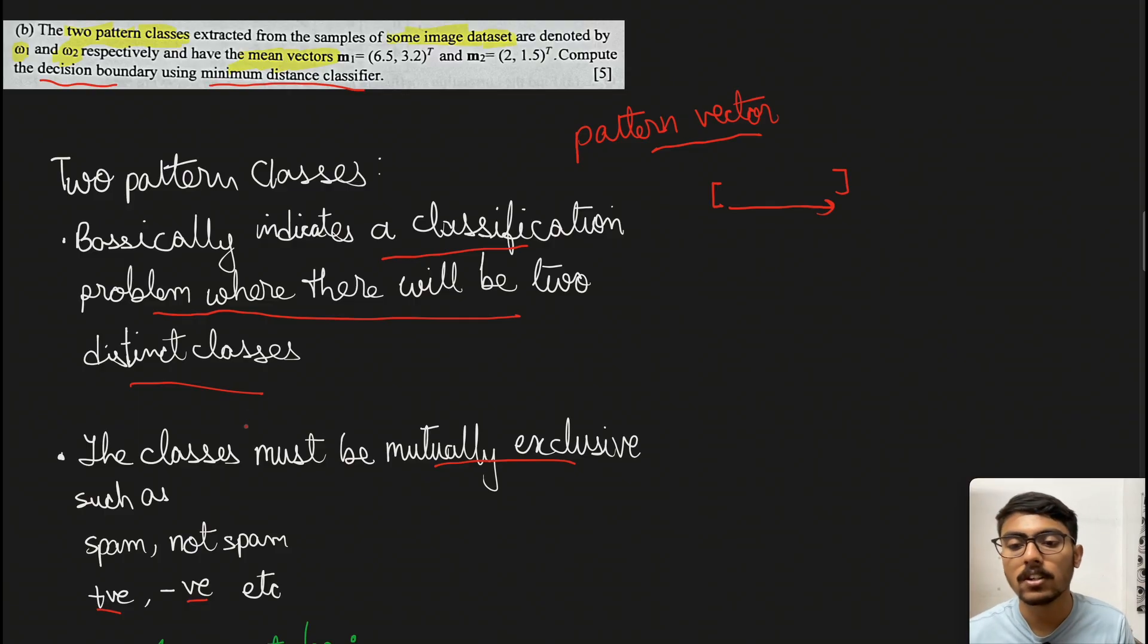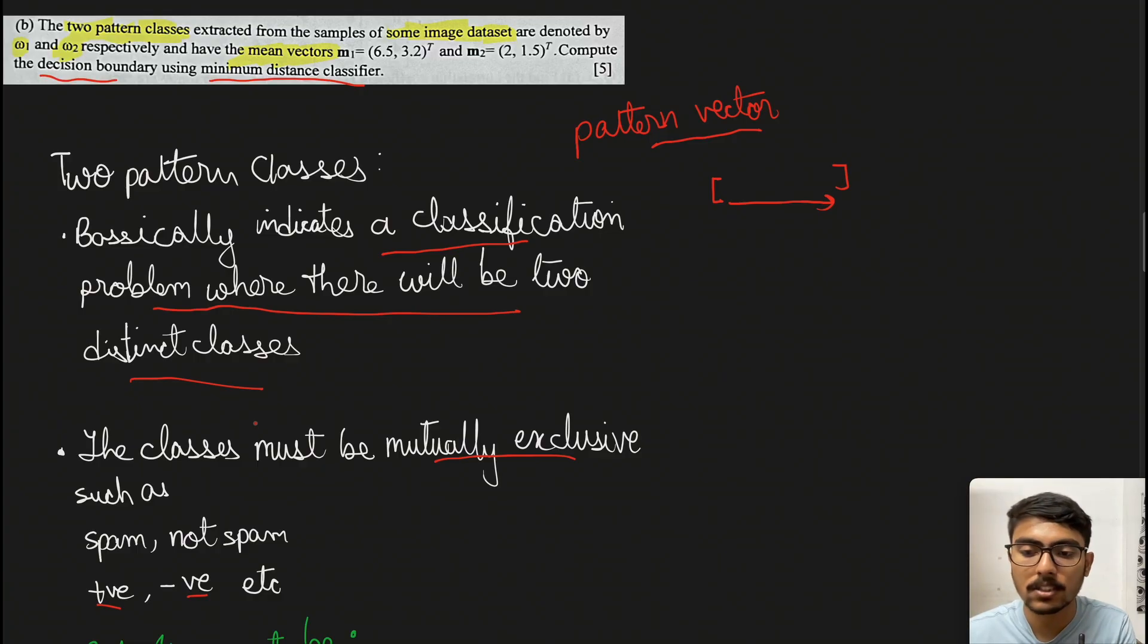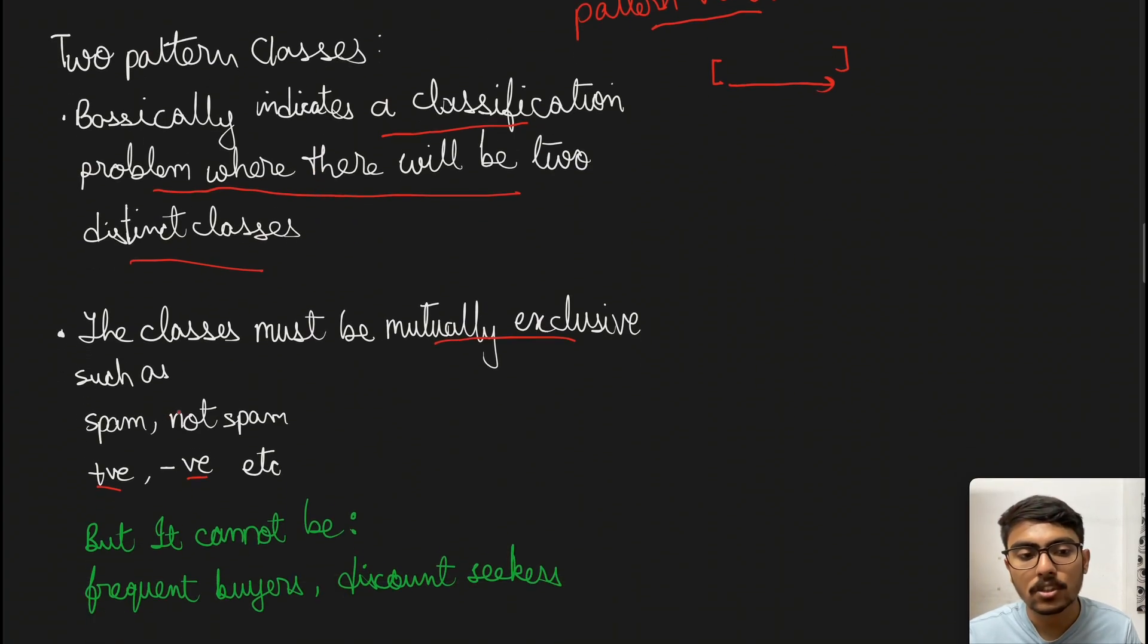I want you to write in the comments which types of classes you think are non-mutually exclusive. For those, we cannot perform minimum distance classifier. For example, consider a retail shop with frequent buyers and discount seekers. We cannot classify them as mutually exclusive classes - there can be a person who enjoys discounts and is also a frequent buyer. We'd need to use something else, like fuzzy logic.